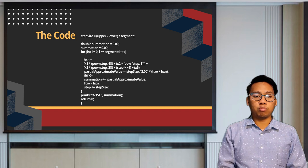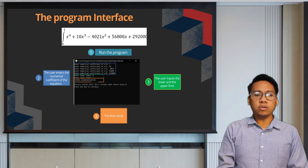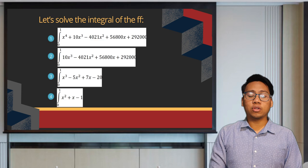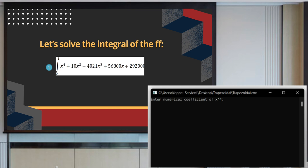To utilize the program, the user runs the program, inputs the numerical coefficient of the equation, inputs the lower and upper limit of the integration, and waits for the approximate value. Let's solve the integral of x raised to 4 plus 10x raised to 3 minus 4,021x raised to 2 plus 56,800x plus 292,000 from 0 to 1.